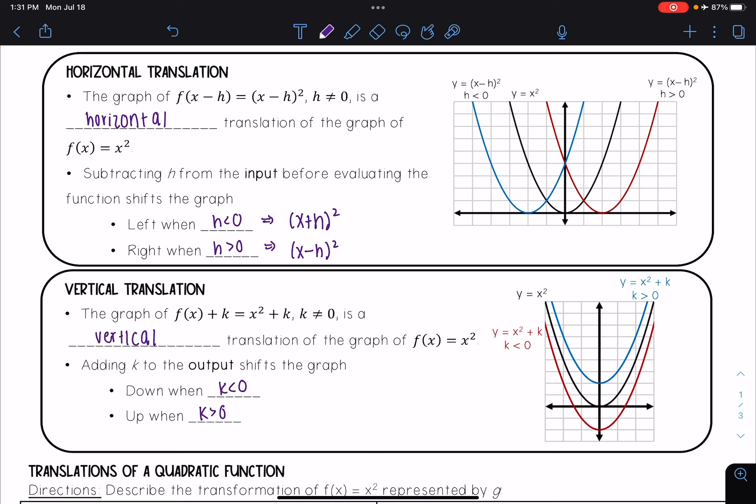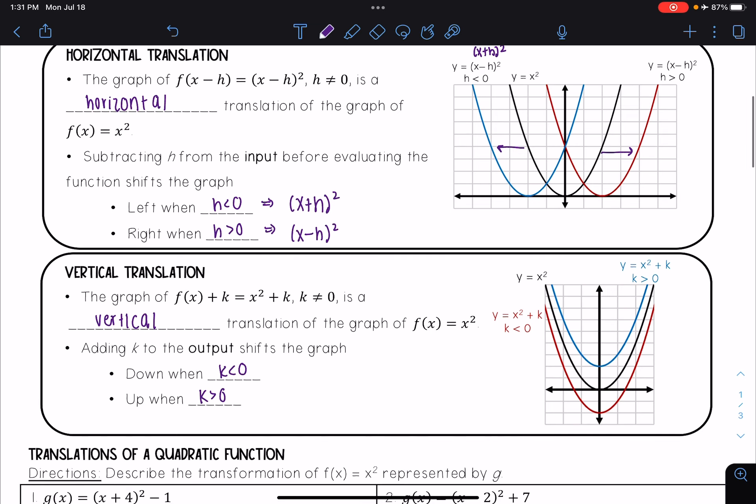Here in red, I see that the graph shifted to the right, so that would be (x - h)². In blue, I see the graph shifted to the left, so that would look like (x + h)² since h is negative. Down here, I see that the blue graph was shifted up and the red graph was shifted down.